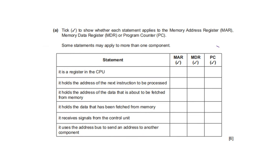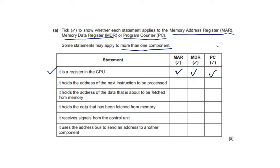Check to show whether each statement applies to memory address register, memory data register, or program counter. Some statements may apply to more than one component. The first statement: it is a register in the CPU — MAR, MDR, and PC (program counter) are all registers.